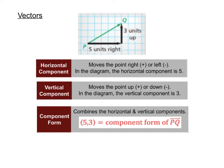Every vector will have both a horizontal and a vertical component. The horizontal component moves the point either right or left. If the horizontal component is positive, that's going to move the point to the right. And if the horizontal component is negative, that's going to move to the left.